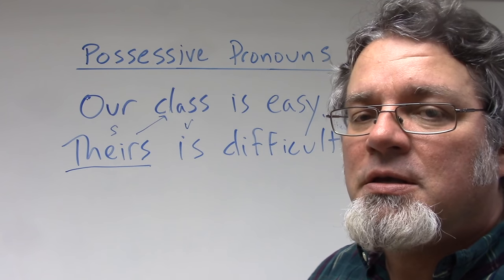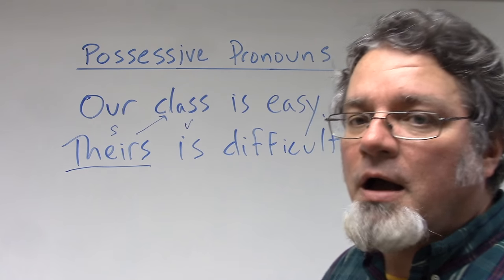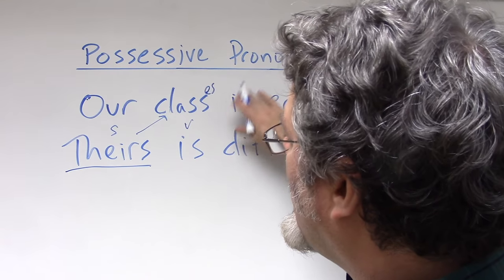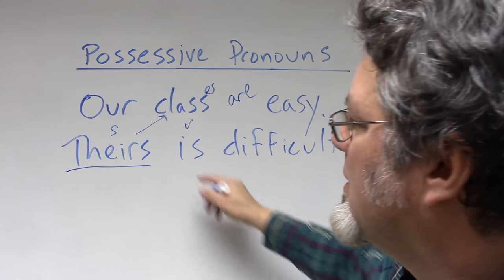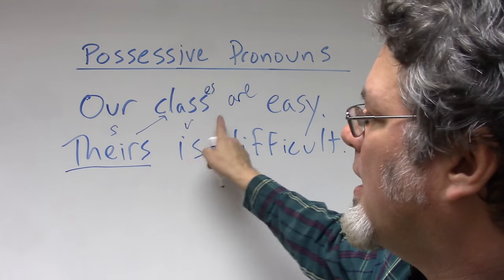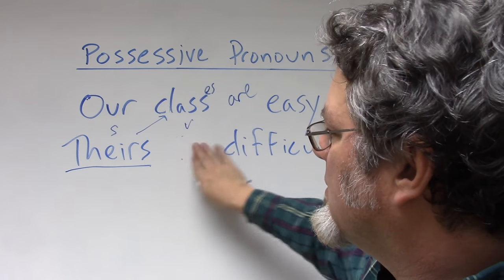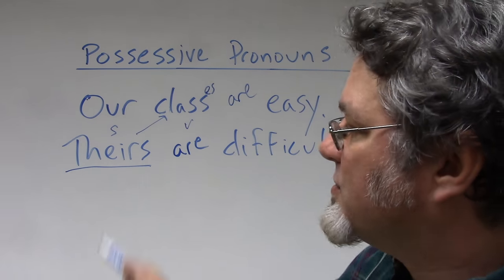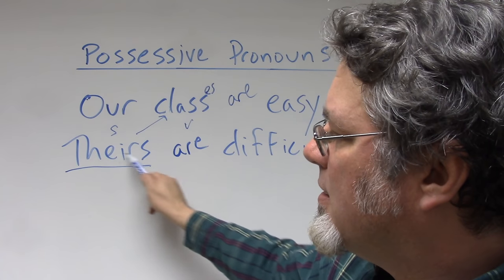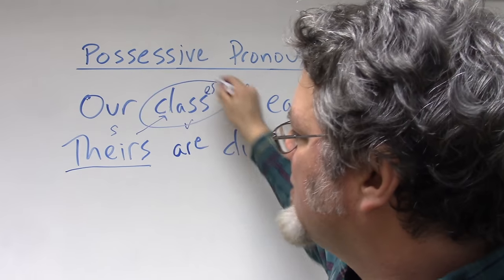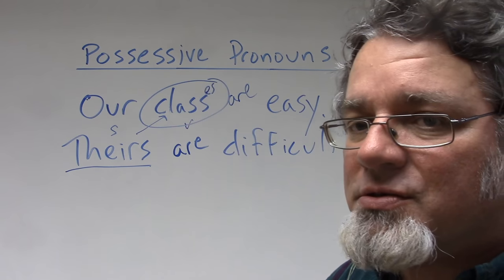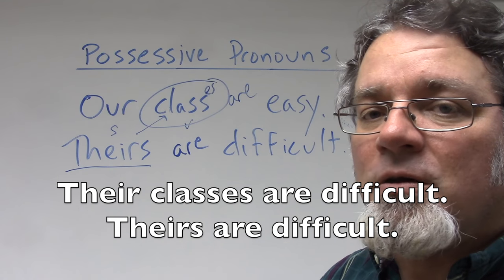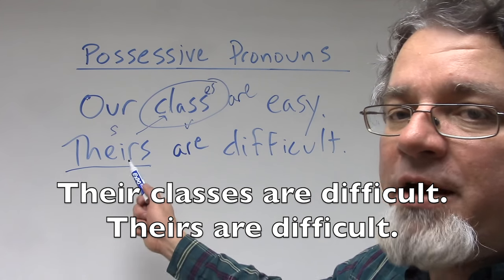Even though there's an S on 'theirs,' the subject is considered singular. I can rewrite these sentences and say 'Our classes are easy,' and then in making the comparison I'd have to change the verb: 'Their classes are difficult,' or 'Theirs are difficult' — because now I'm thinking about the word in the plural form.